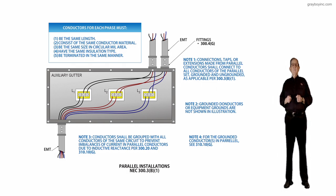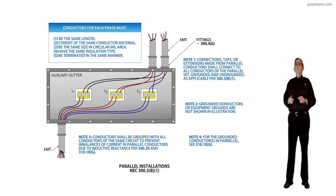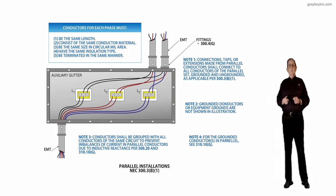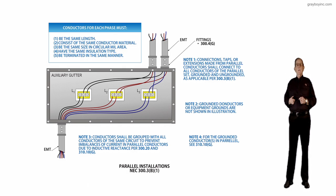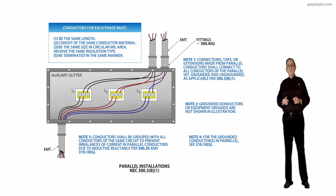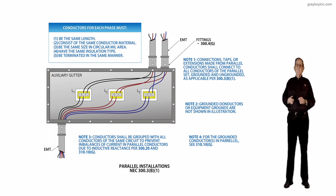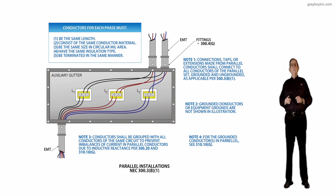If you look at the paralleling section number, 310.10G deals with paralleling conductors, and they have to be at least one AWG or larger for reasons we previously mentioned.